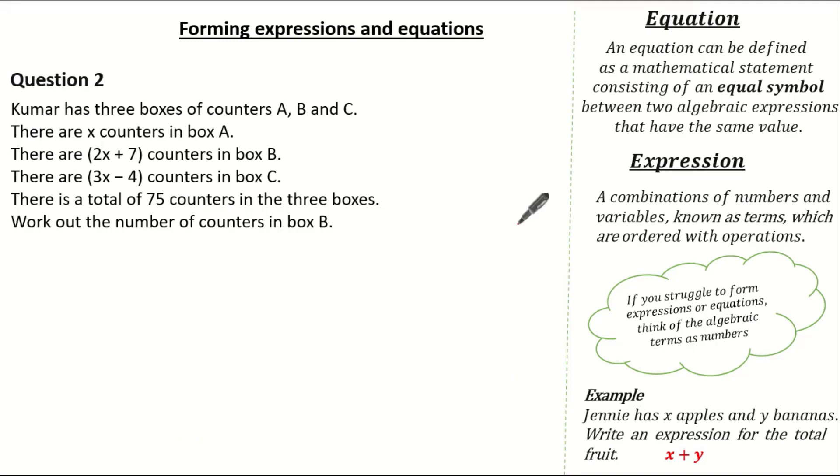Now let's have a look at our next exam question. It says Kumar has three boxes of counters, A, B and C. There are x counters in box A. There are 2x plus 7 counters in box B. There are 3x minus 4 counters in box C. Now we know the total number of counters in all three boxes is 75. And we're asked to work out the number of counters in box B. I'm going to give you a hint and say you need to form an equation. See if you can give it a go and press pause if you need.